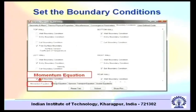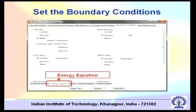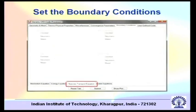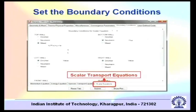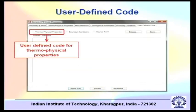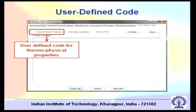Then set the boundary conditions. You can use different types of boundary conditions for different equations — for example, for the momentum equation, energy equation, species transport equation, and for any other generic scalar equations. For each type of equation you can use different boundary conditions. We will go into the boundary conditions in more detail through one or two examples later on.